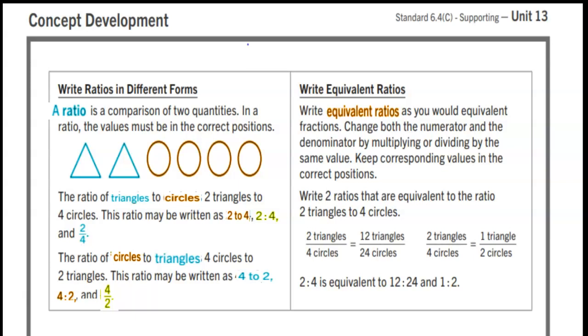Let's write two ratios that are equivalent to the ratio two triangles to four circles. Two triangles to four circles is the same as twelve triangles to twenty-four circles. We know that because we can multiply two times six and four times six to get twelve over twenty-four.